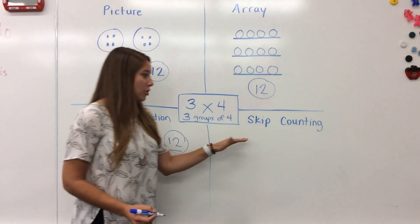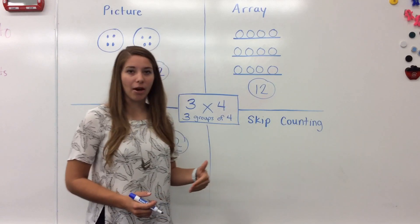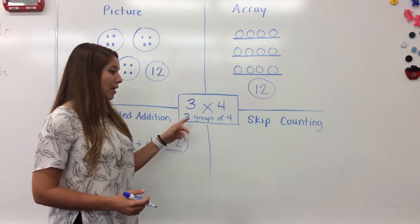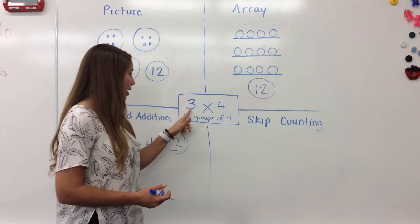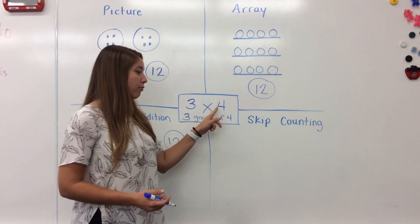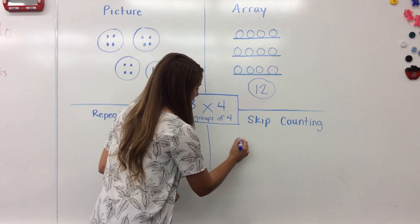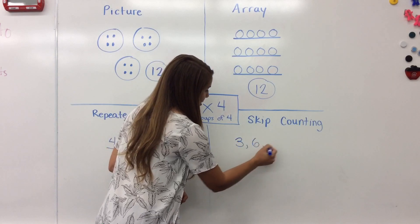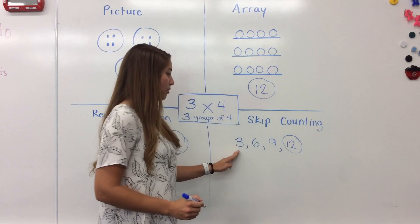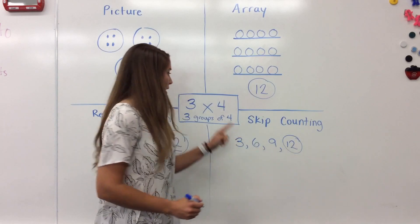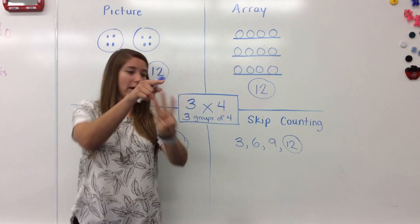The last strategy, and the one you'll probably use the most, is skip counting. When we skip count, we count by one of the numbers in the problem. We can count by three or we can count by four. If I count by threes, I count four times: three, six, nine, twelve. Or I can count by fours three times: four, eight, twelve. Either way I get the same answer.